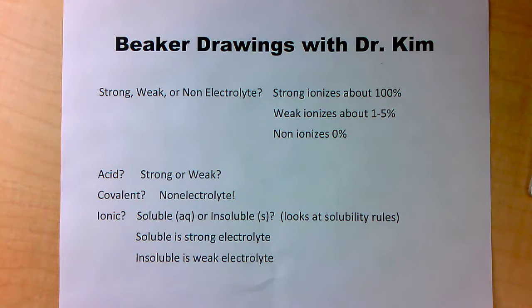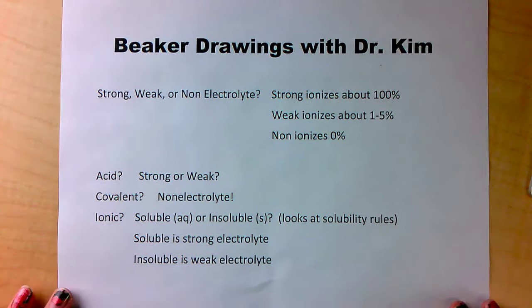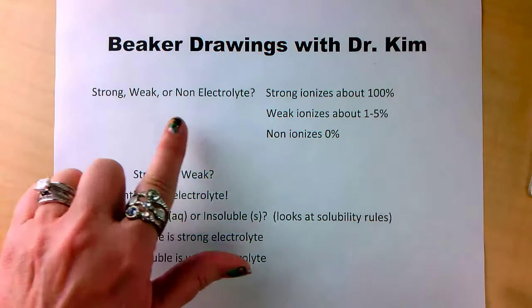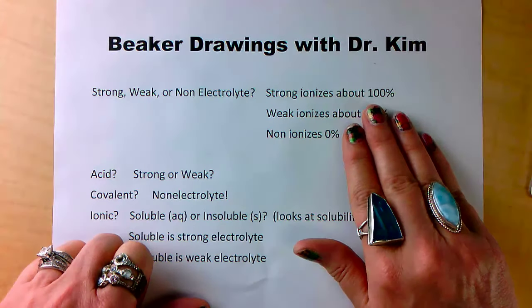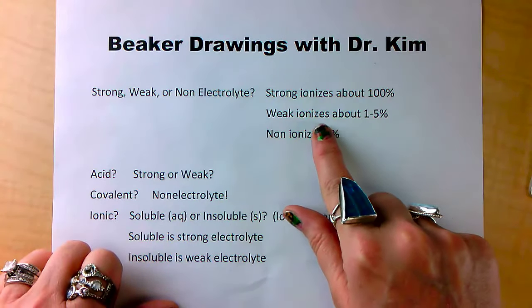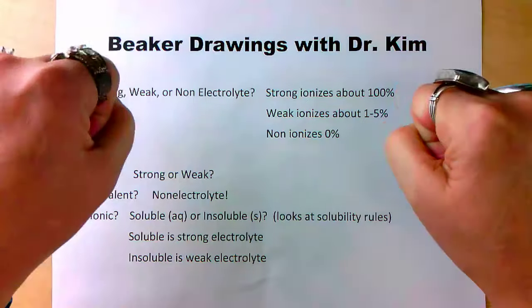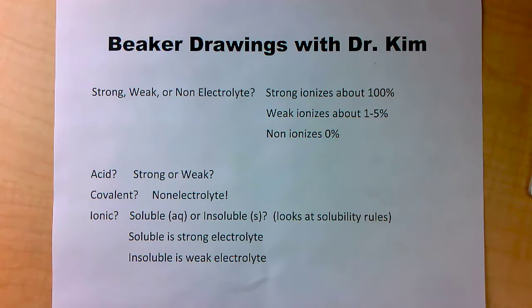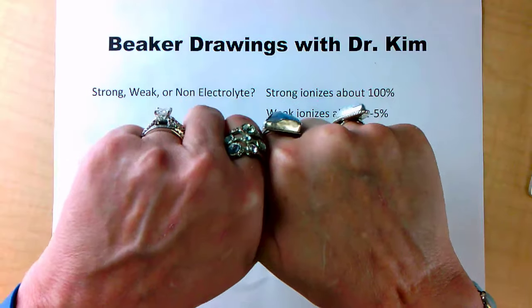Hello, Glendale Community College Chem 130 students and other chemistry students. Today, we're going to work on drawing chemicals in beakers of water — what we call beaker drawings. In order to correctly draw a beaker drawing, you need to know if what you're drawing is a strong, weak, or non-electrolyte. A strong electrolyte ionizes about 100%, meaning it breaks apart into ions. A weak electrolyte ionizes only about 1% to 5%, meaning most of it stays together and just 1% actually breaks apart in solution. Non-electrolytes ionize 0% — they stay completely together.